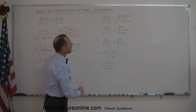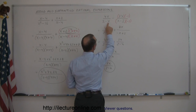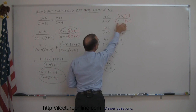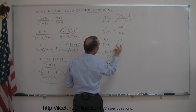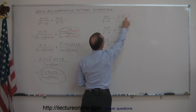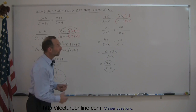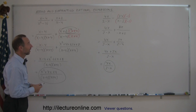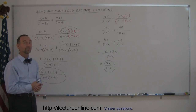Sometimes they make the denominators look almost the same, except one is the negative of the other. If you multiply by negative 1, you get the exact same denominator. Whatever you do to the denominator, you must do exactly the same to the numerator. Hopefully that helps, and hopefully this will help you in how to add and subtract rational expressions. Thank you very much.